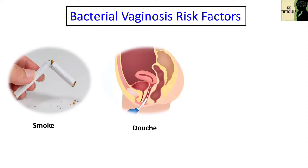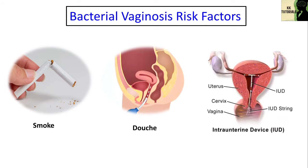A new sex partner or having more than one makes it more likely that you will get BV. It isn't clear why, but women who have female partners are most at risk. You can get BV from oral and anal sex. The IUD birth control device, which fits inside your uterus, has been linked to BV, especially if you have irregular bleeding, but it doesn't clear whether it's a direct cause. You can't get vaginal infection like BV from swimming pools or public toilet seats.